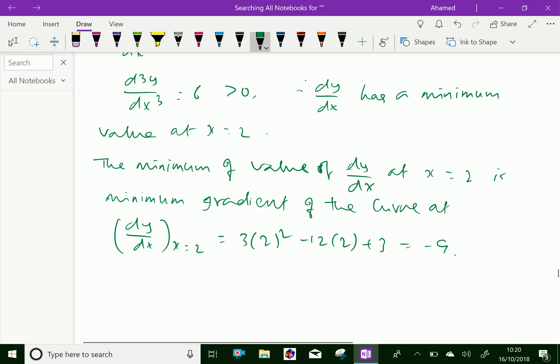Therefore, the minimum gradient at x = 2 is -9. The minimum gradient of the curve is -9.